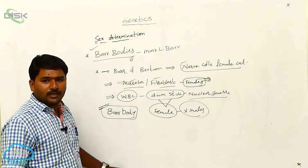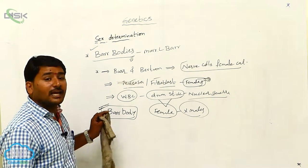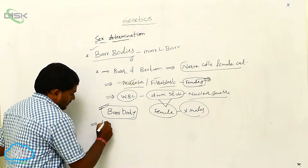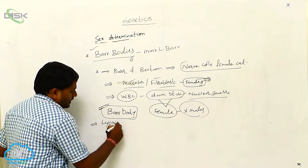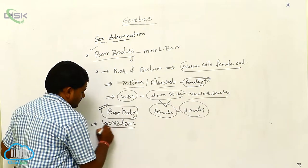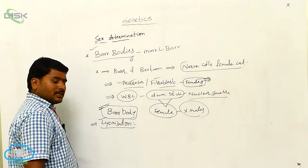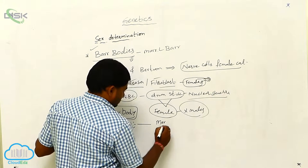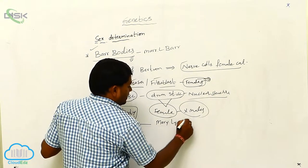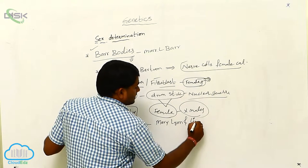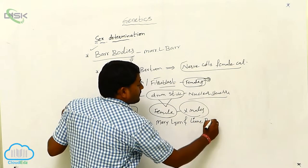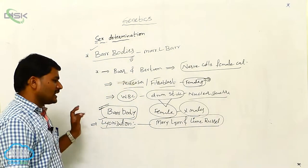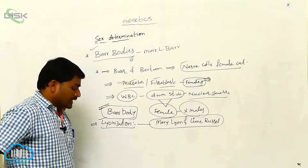This is called bar body. Let us see lyonization. What is lyonization? Mary Lyon and Leanne Russell — these two people proposed lyonization.